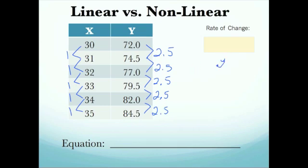Our y over x is 2.5 over 1, which is 2.5. We have a rate of change of 2.5, which means we can write our equation, start writing our equation as y equals 2.5x.